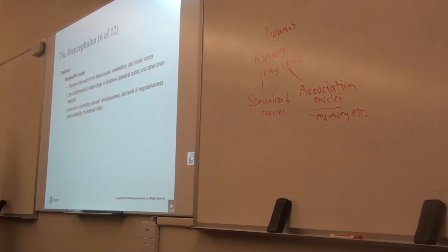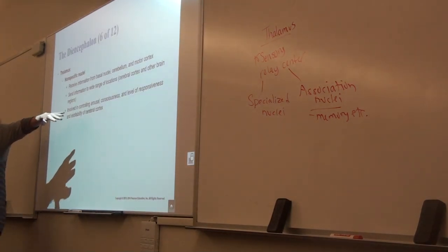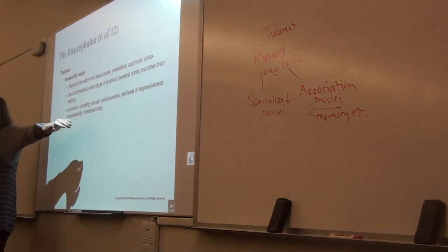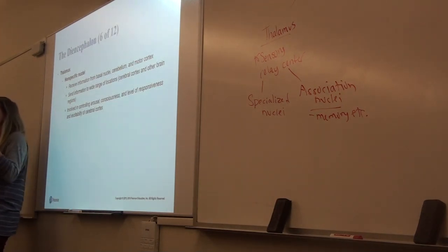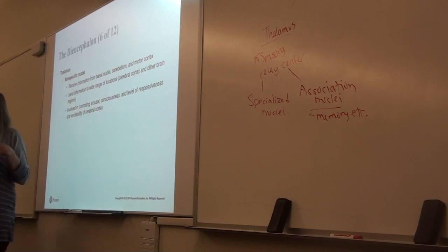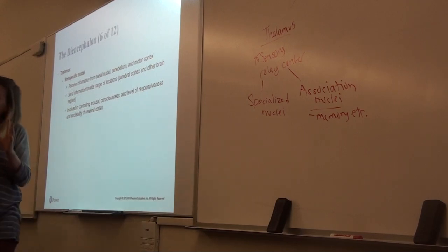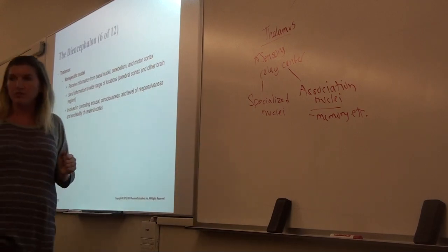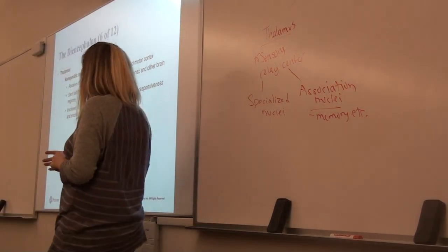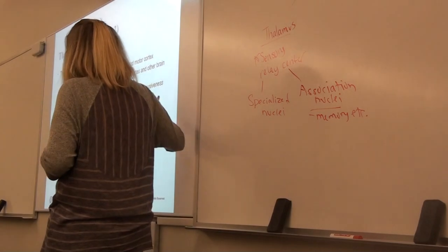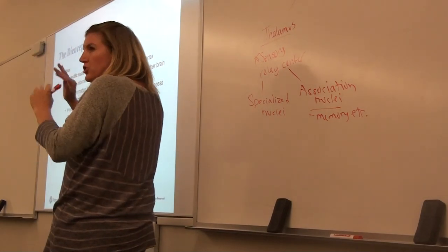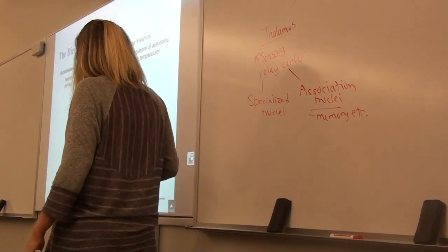There are also nonspecific nuclei within the thalamus — things that control our consciousness and level of responsiveness, such as whether you're awake or dozing off. Some of that is regulated in parts of the thalamus. There are different functional groups in the brain that do this.